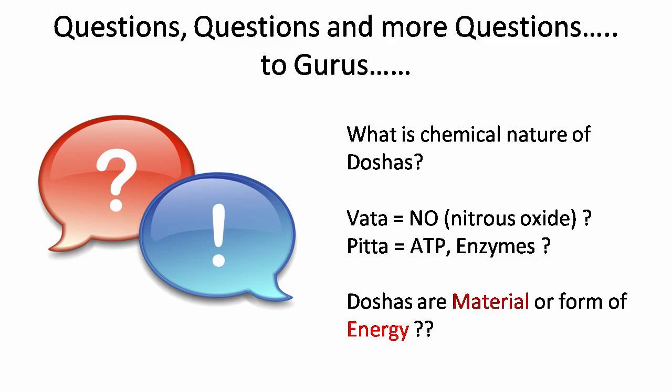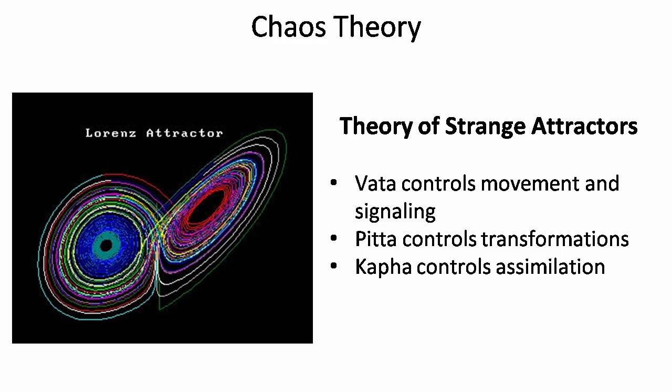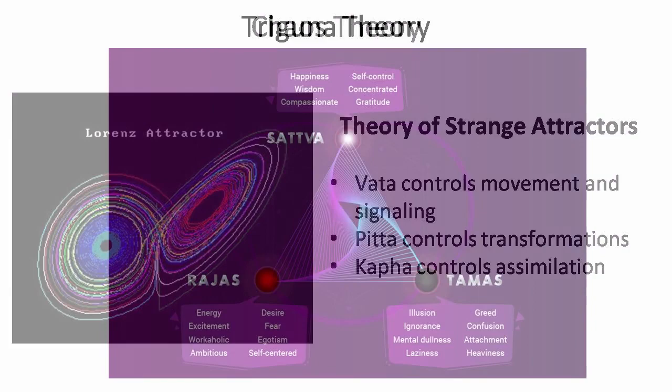Then I came across the second school of thought, which was more near to me: that these are forms of energy. When I was reading about chaos theory or complexity theory, I came across a concept called strange attractors — at the borderline between disorder and order. With this, I first got my insight about Tridosha theory.